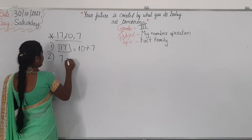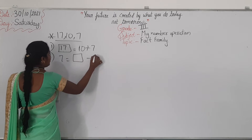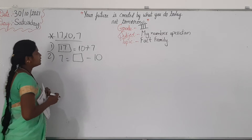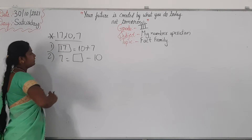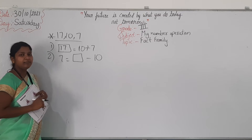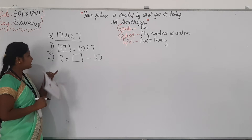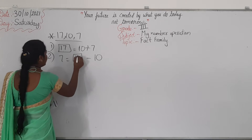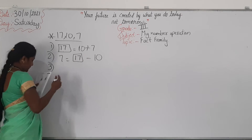One more question: 7 equals blank box minus 10. So, which number will come here? If you write 17 here, 17 minus 10 will be 7. Correct answer. So, 17 is the correct number.